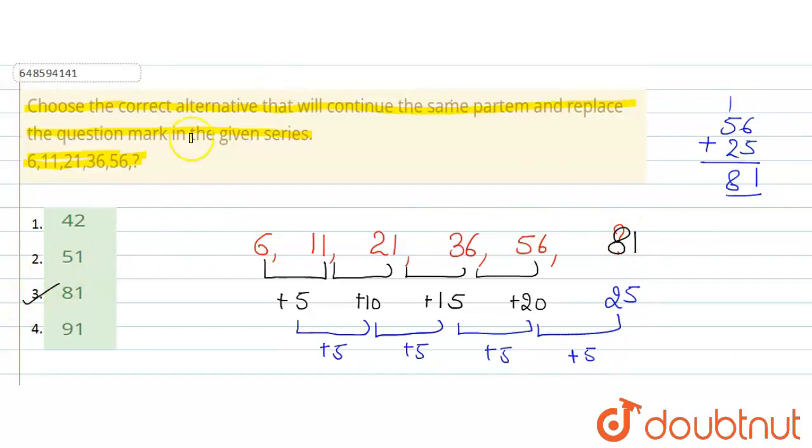81 is your option number 3. So, option number 3, 81 is the correct answer. Thank you.